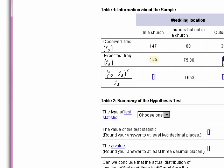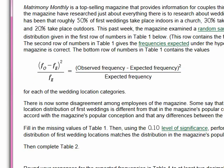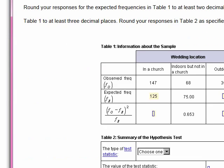Now for the outdoors: if we scroll up, remember the outdoor weddings was 20% take place outdoors. So we would do 250 times 20%. And 250 times 0.2 will give us 50. So let's fill in that value of 50 into our table.